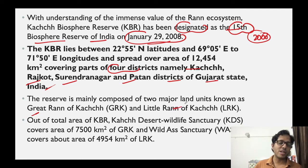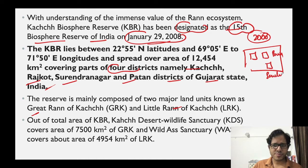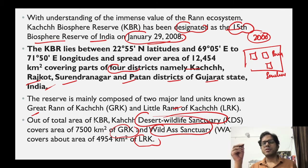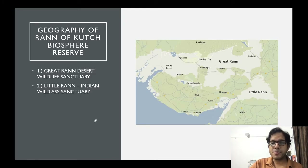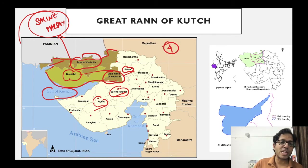One Biosphere Reserve consists of many National Parks, Sanctuaries, Conservation Reserves, and Community Reserves. In fact, these smaller protected areas reside within the Biosphere Reserve. In Run of Kutch: within Greater Run of Kutch there is the Desert Wildlife Sanctuary, and within Little Run of Kutch there is the Wild Ass Sanctuary. These two sanctuaries occupy the maximum area within their respective regions.